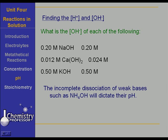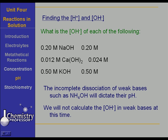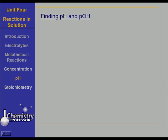The incomplete dissociation of weak bases, such as ammonium hydroxide, will dictate their pH, just as the incomplete dissociation of weak acids, such as acetic acid, dictates their pH. But we're going to deal with that at a later time.